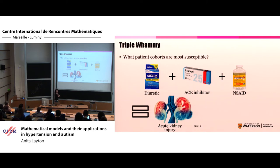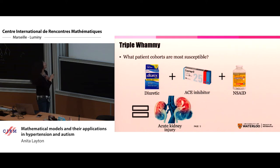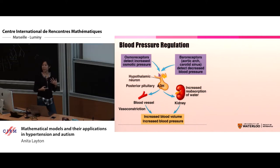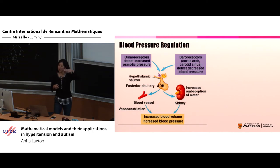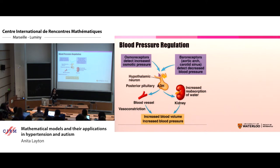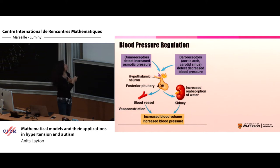What I'm interested in is understanding the mechanism that goes from taking rather benign-sounding drugs to having serious effects. Also interesting to me is how come some patients, when they take this drug, they are fine — but some other patients are more susceptible to this acute kidney injury. I want to understand what makes some people really, really sick. This all has to do with blood pressure regulation, so I'll give a 101 on blood pressure regulation.